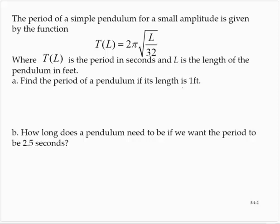The period of a simple pendulum for a small amplitude is given by the function T(L) equals 2π times the square root of L over 32, where T(L) is the period in seconds and L is the length of the pendulum in feet.